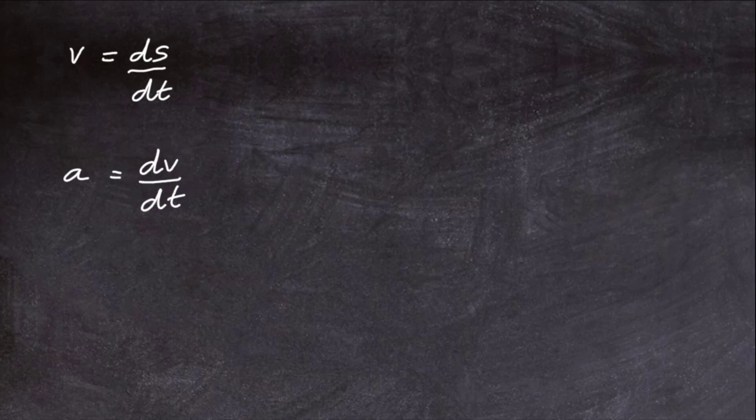So if we know the displacement of an object as a function of time, finding the derivative will find the velocity at any time. And likewise, if we know the function for velocity with respect to time, finding the derivative gives us acceleration.